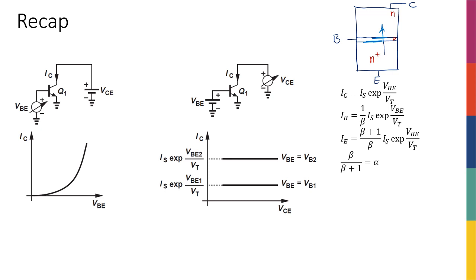A very small number of electrons recombine in the base region, and the majority reach the collector. The current reaching the collector is essentially the current generated by the forward-biased base-emitter diode. So it's not surprising that the collector current has an expression very similar to a diode's current-voltage expression. For a diode, ID = IS * e^(VD/VT). Since we have a diode between base and emitter, the collector current becomes IC = IS * e^(VBE/VT).